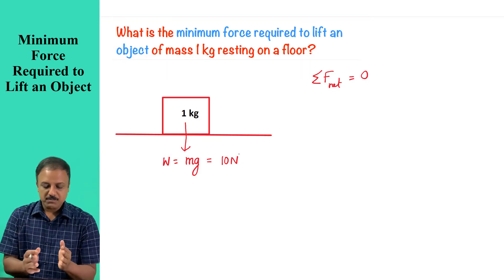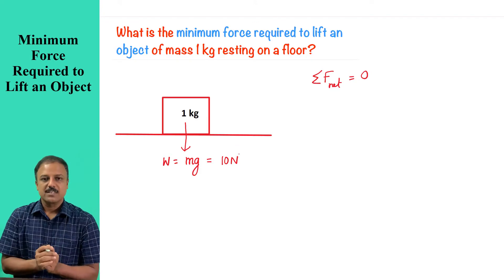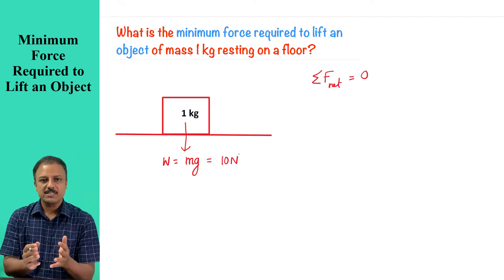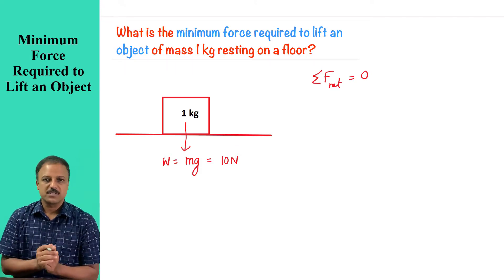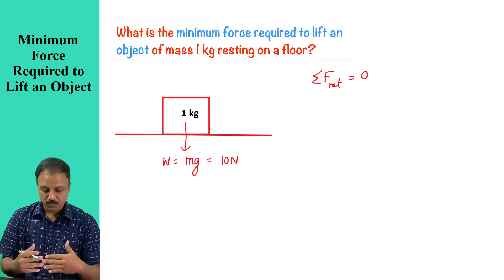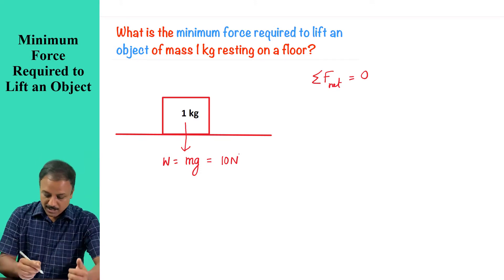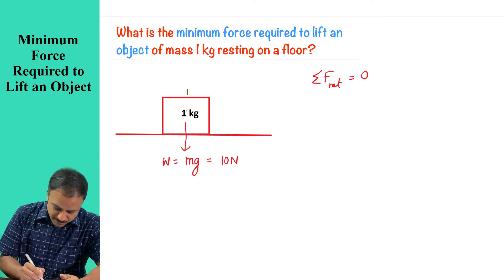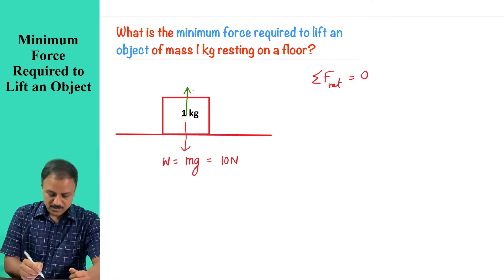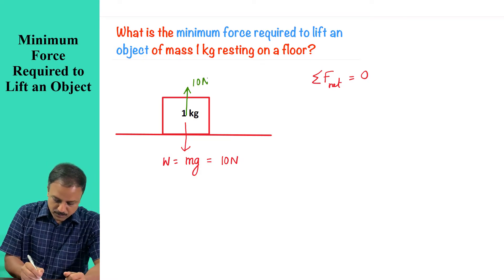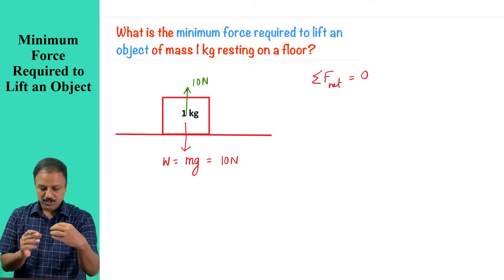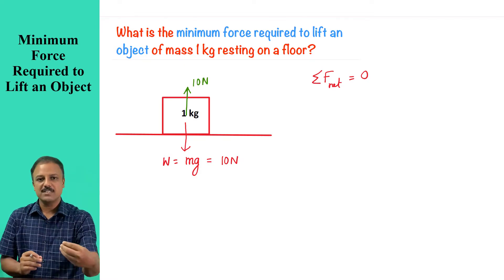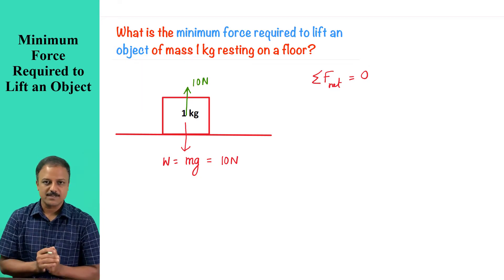Since the object remains at rest, this force will be balanced by another force, and that is going to be exerted by the floor on the object. This force should also be 10 Newton. You can look at these two forces — they balance each other and the object remains at rest.